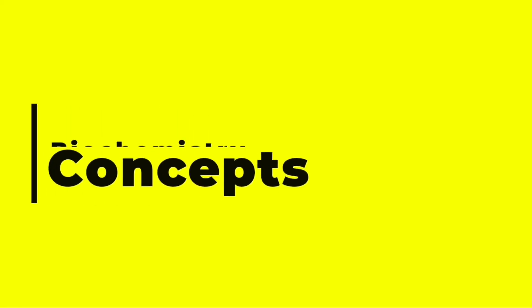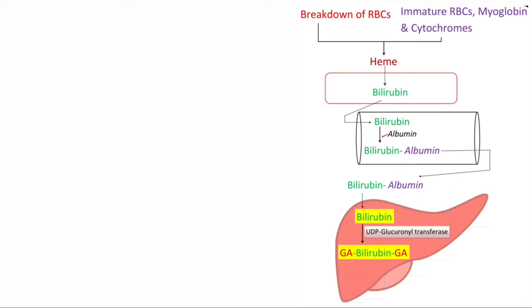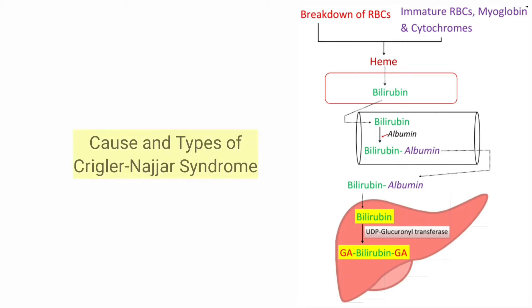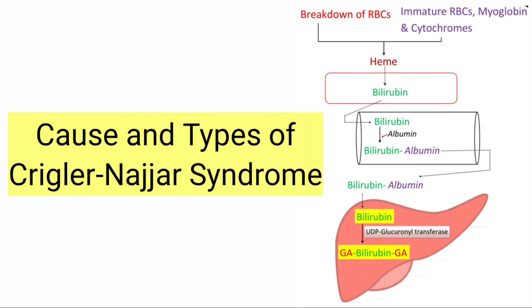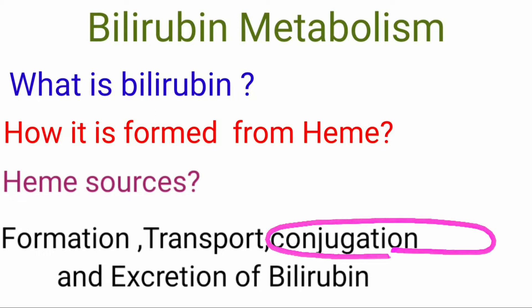Hello everyone. Welcome to my channel Biochemistry Concepts. This video is about what causes and what are the different types of Crigler-Najjar syndrome. This Crigler-Najjar syndrome is due to complete absence or a marked reduction in the bilirubin conjugation.